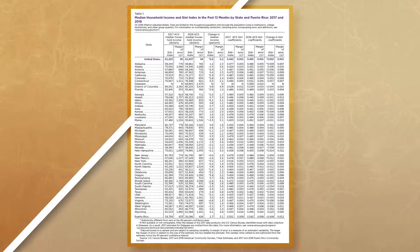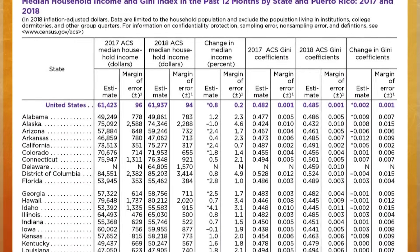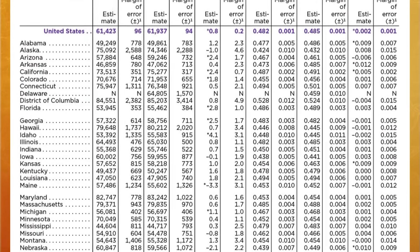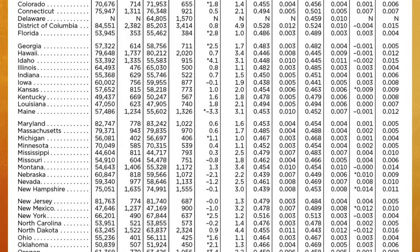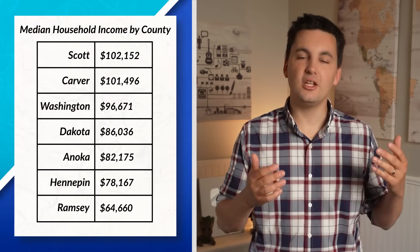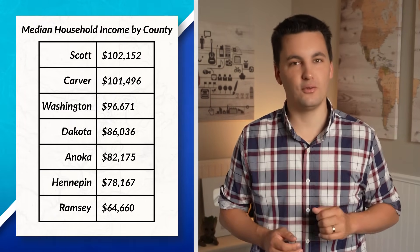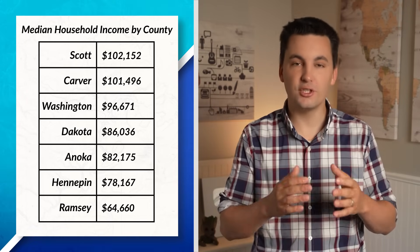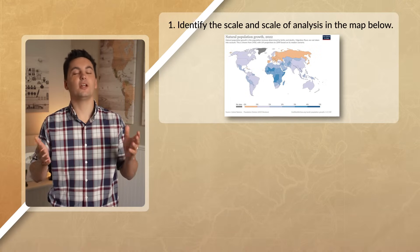It isn't just maps that use scale and scale of analysis — we can also look at data tables. For example, here we can see a table showing the median household income by state, organized by the different states of the United States. If we want to change our scale and zoom in, we could look at data organized at the county level. For example, taking Minnesota, we can see the median household income between 2015 and 2019 for the different counties of the state.